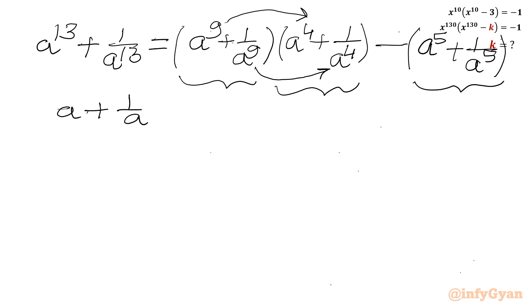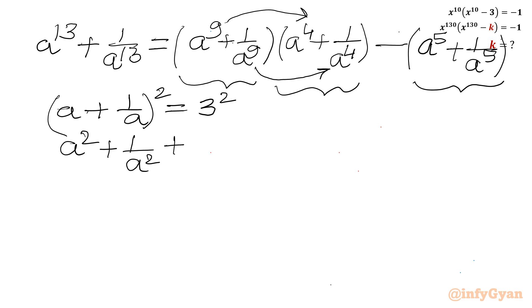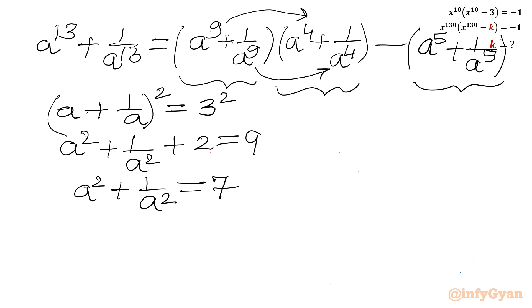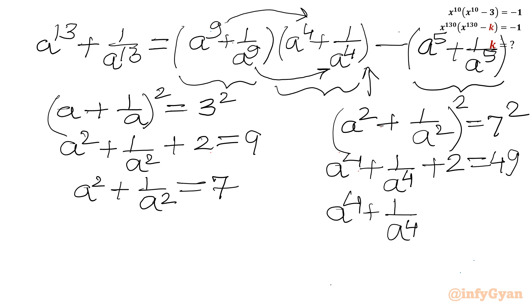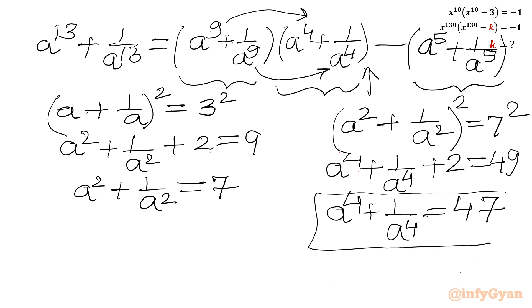To find a^4 plus 1 over a^4, I first square both sides of a plus 1 over a equal to 3. This gives a^2 plus 1 over a^2 plus 2 equal to 9, so a^2 plus 1 over a^2 equals 7. Squaring again: (a^2 plus 1 over a^2)^2 equals 7^2, giving a^4 plus 1 over a^4 plus 2 equals 49, so a^4 plus 1 over a^4 equals 47. We will use this result later.